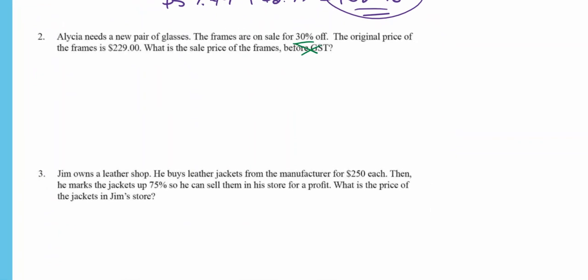Alicia needs new glasses. The frames are on sale for 30% off; the original price is $229. We need to find the sale price before GST — which means we ignore the GST and just focus on the 30% off. Starting with $229, we need to figure out what 30% of that dollar amount is, then subtract it.